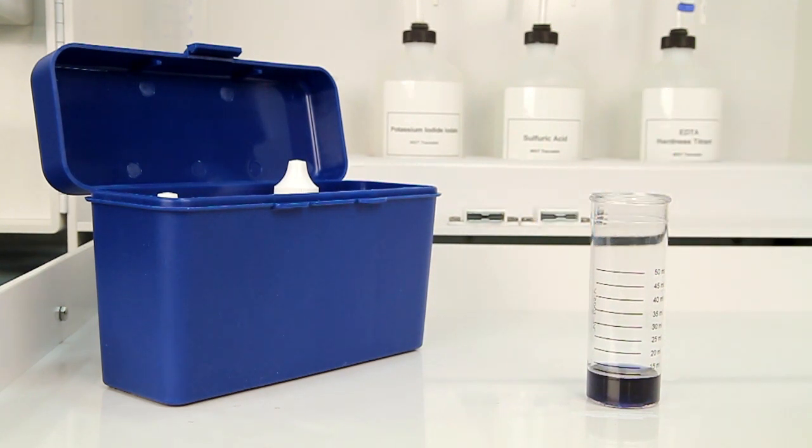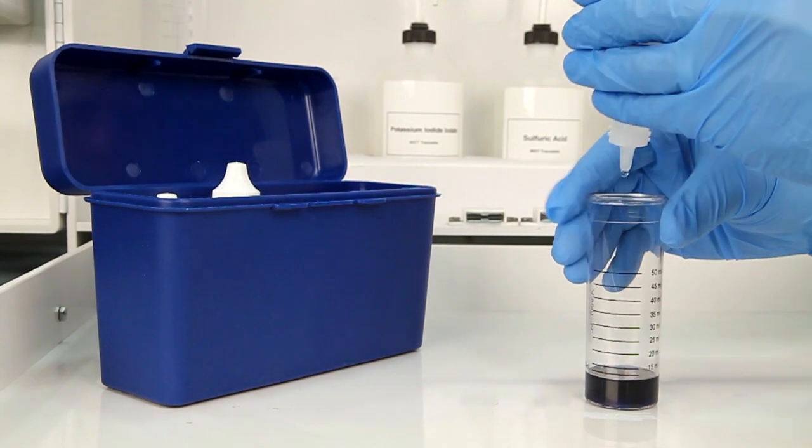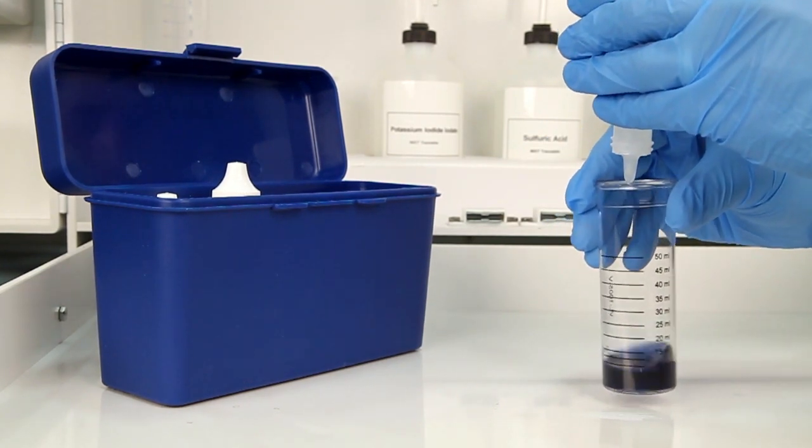The sample should turn dark brown to dark blue if iodine is present. The next step is to perform the titration using sodium thiosulfate titrant. It's important to make sure you have the proper titrant and the proper sample size for this titration.